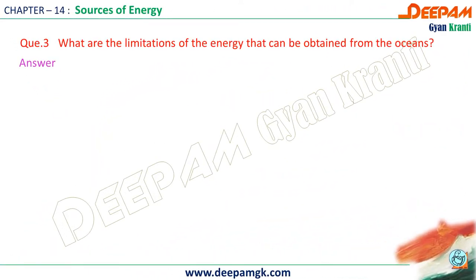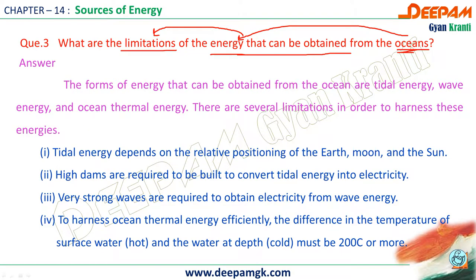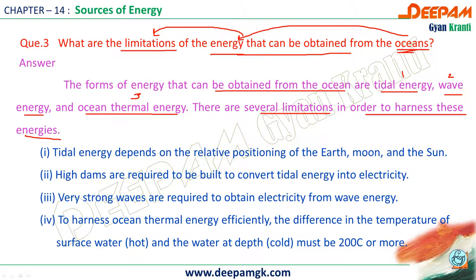The third question is: what are the limitations of the energy that can be obtained from the oceans? The forms of energy that can be obtained from the ocean are tidal energy, wave energy, and ocean thermal energy. However, there are several limitations in harnessing these energies — we cannot directly use tidal energy, wave energy, and ocean thermal energy without addressing these limitations.